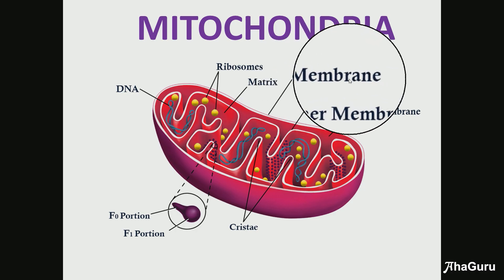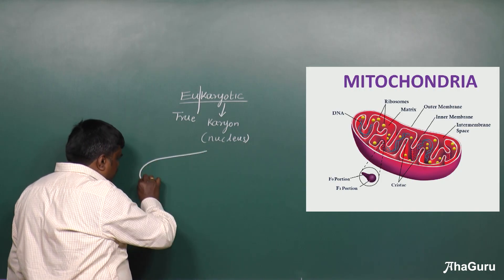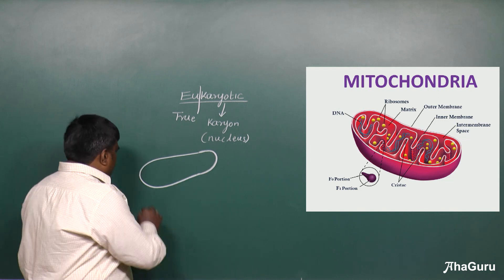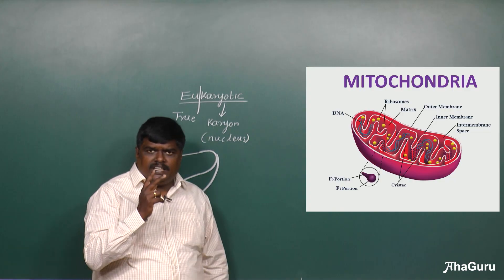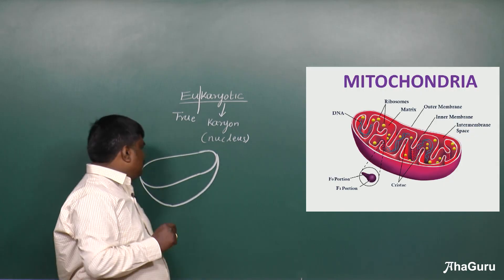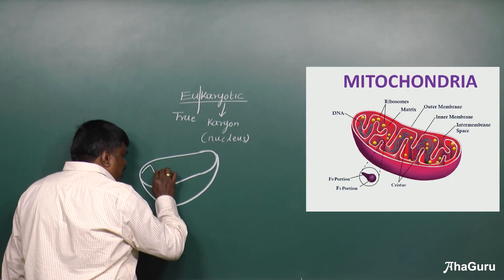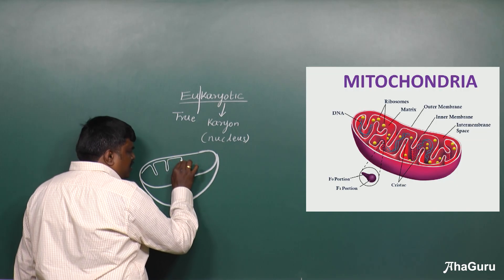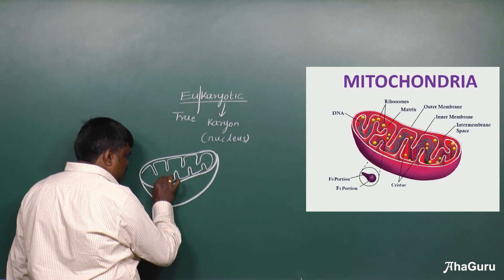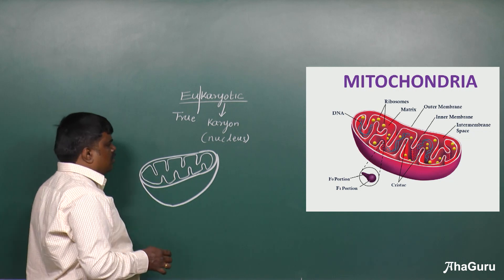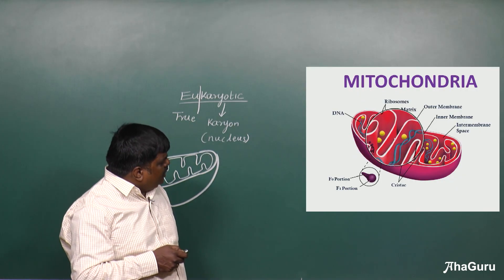As you can see in the diagram, there is an outer membrane. There are two membranes: one is the outer membrane, and the second is called the inner membrane. The inner membrane is invaginated — it shows an inward movement like this.